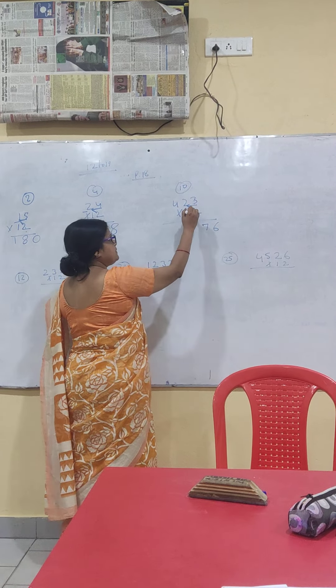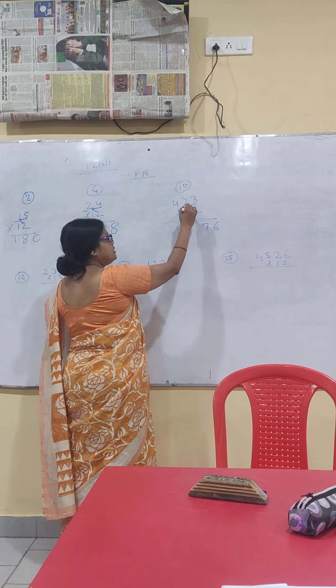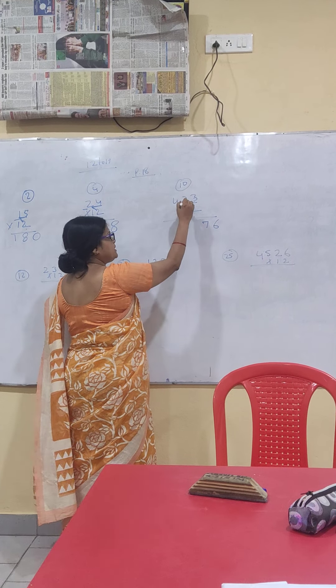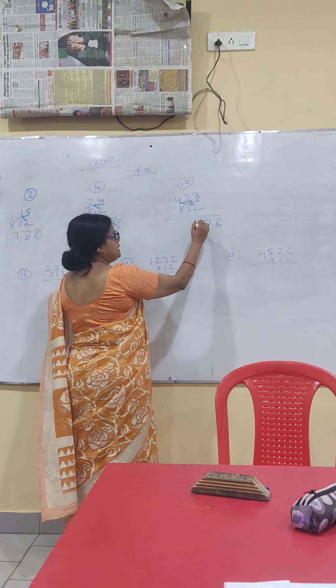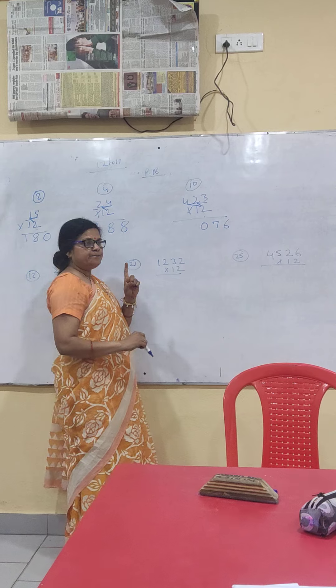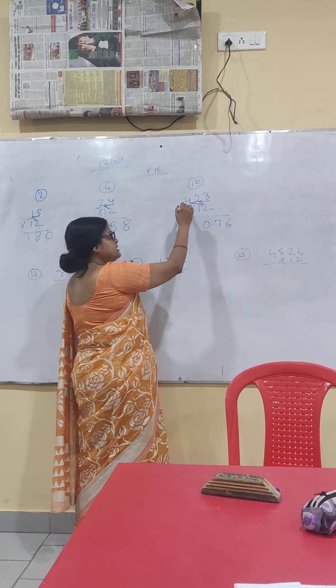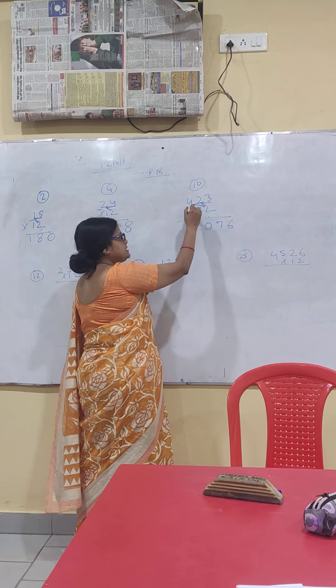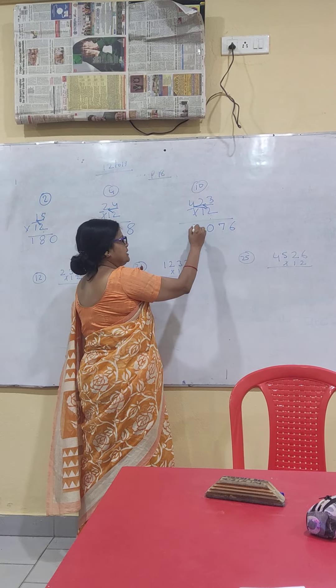Next number: 2 fours are 8. 8 plus 2 is 10. Carry 1. 2, 2, 4 — 9. Now the next number is 10. 9. Now let's write: 10 digit plus carry 1.